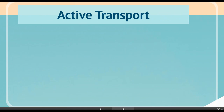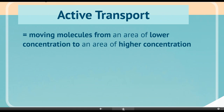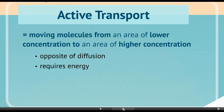A different kind of movement is active transport. This is when we move molecules from an area of low concentration to an area of high concentration — moving molecules against the concentration gradient. Think of this as moving something uphill instead of downhill. It's the opposite of diffusion and requires energy in the form of ATP. This also uses embedded proteins, but a different set of embedded proteins.